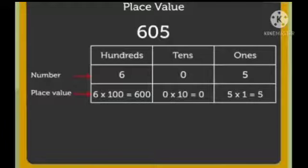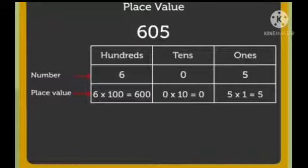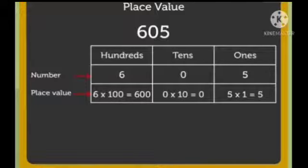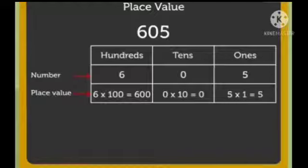Now the next number is 605. Here, 5 is at the 1's place, 0 is at the 10's place, and 6 is at the 100's place. So 6 multiplied by 100 is equal to 600. And 0 multiplied by 10 is equal to 0, because when any number is multiplied by 0, you get 0 only. Then 5 multiplied by 1 is equal to 5.